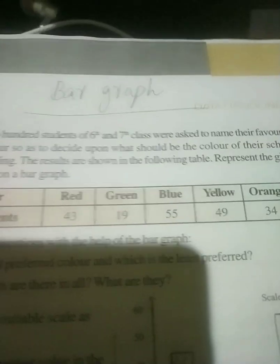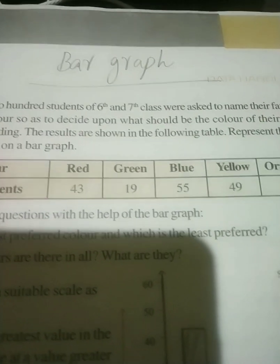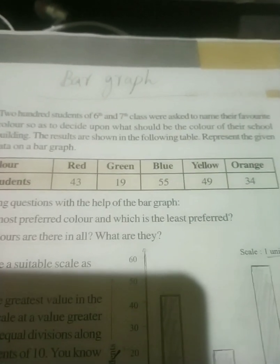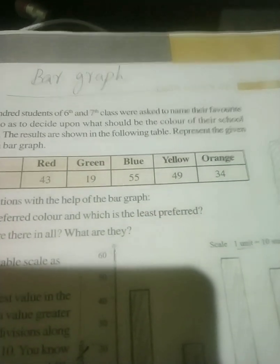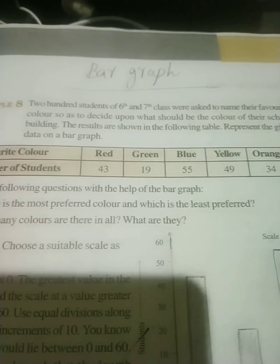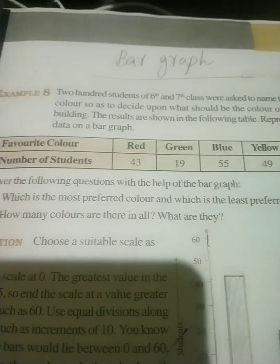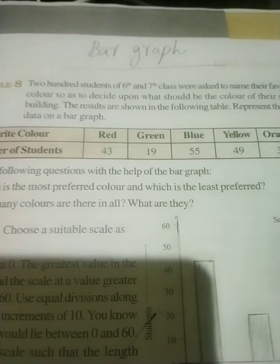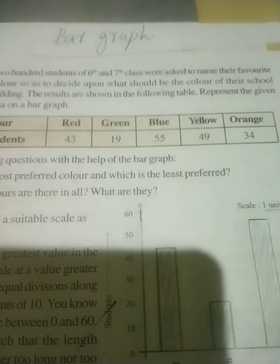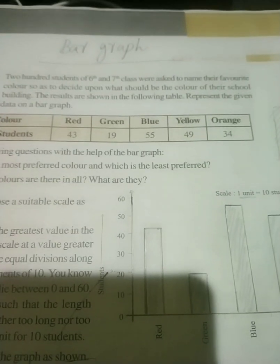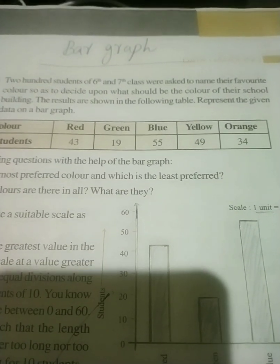Now we can go through the example given in the textbook. The question was: 200 students of 6th and 7th class were asked to name their favorite color, so as to decide what should be the color of their school building. The results are shown in the following table. Represent the given data on a bar graph. The favorite colors and number of students: Red — 43, Green — 19, Blue — 55, Yellow — 49, Orange — 34.